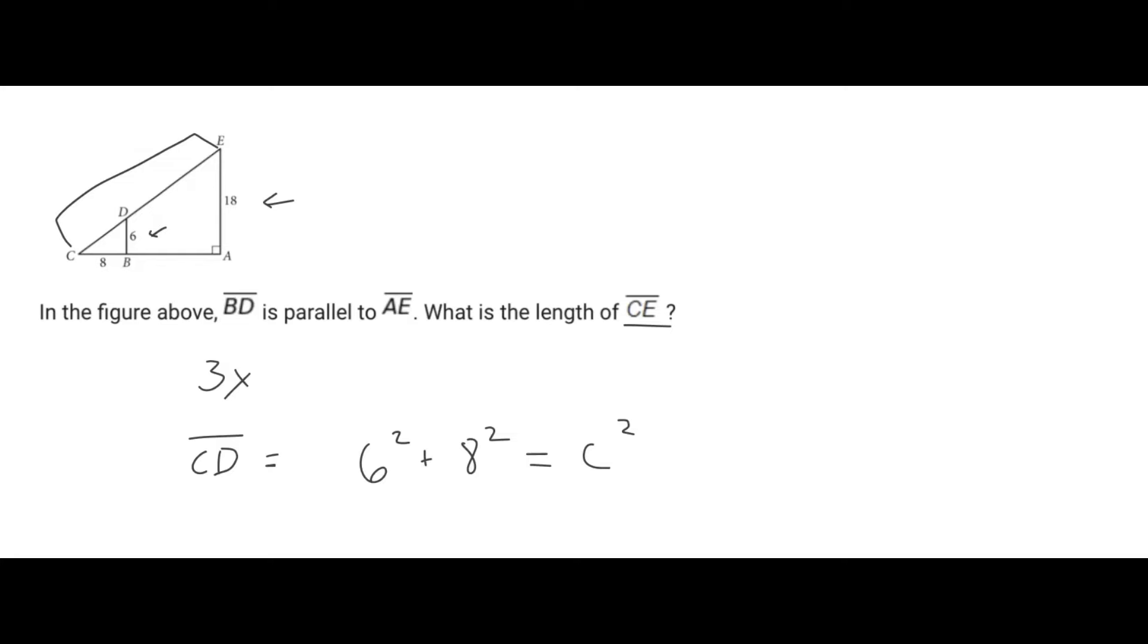So we get 6 squared, 36, plus 64 is 100. And therefore C squared, and then if you take the square root of both sides, we ultimately get C equals 10.